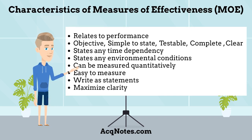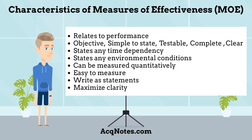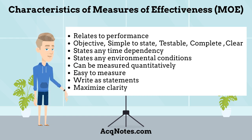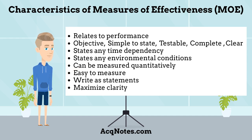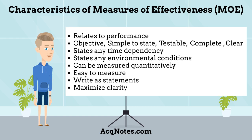What are the characteristics of a measure of effectiveness? The following is a list of characteristics they can have: Relates to performance, Objective, Simple to state, Testable, Complete, Clear, States any time dependency, States any environmental conditions, Can be measured quantitatively if required, May be measured statistically or as a probability, Easy to measure, Write as statements not questions, and finally, maximize clarity.